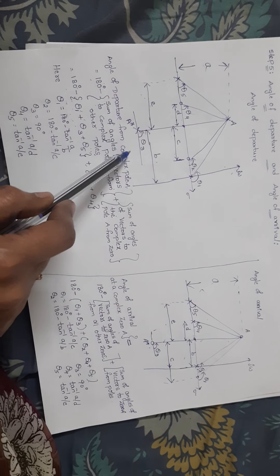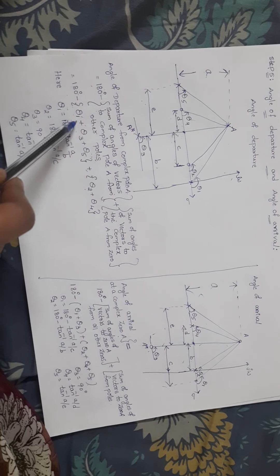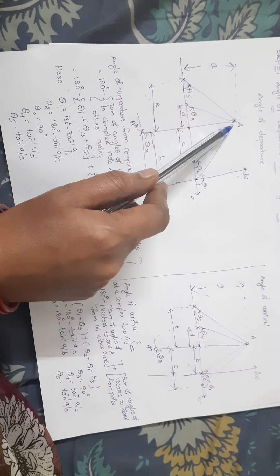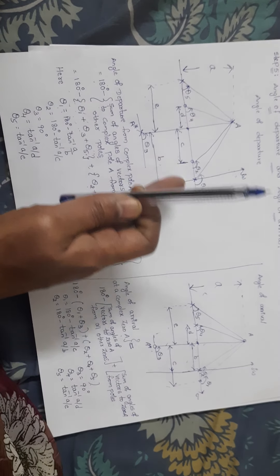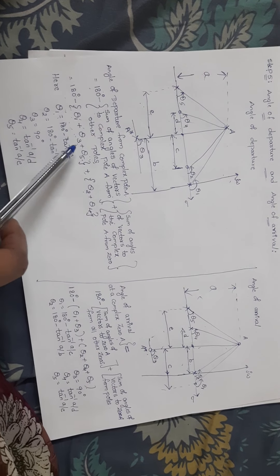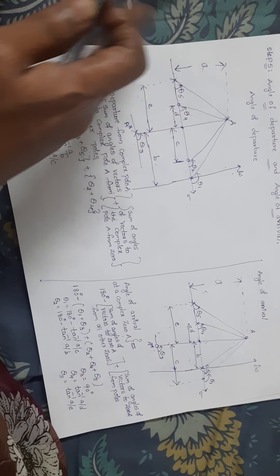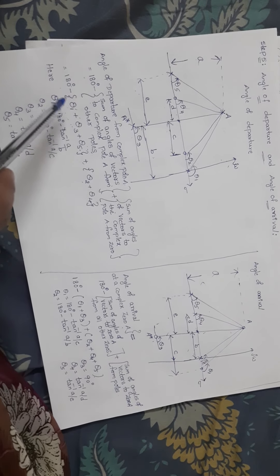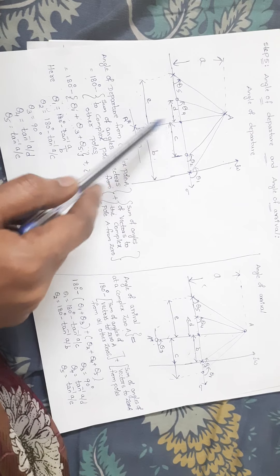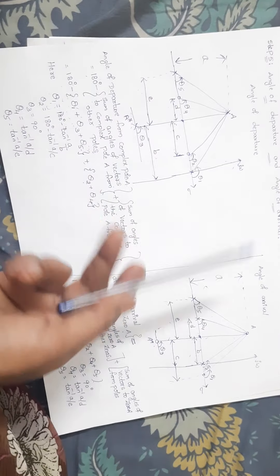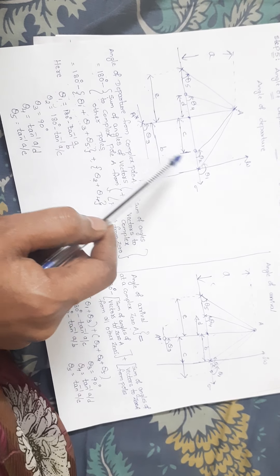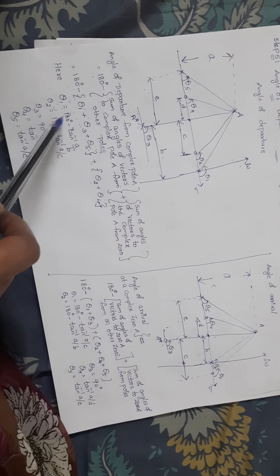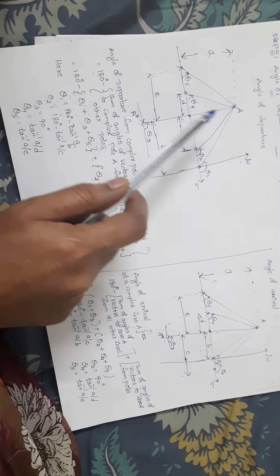In the formula, first you write the pole angles, then the zero angles. Now, for calculating each theta: if the pole or zero is to the right side of this vertical line through the complex pole, you write the angle as 180 degrees minus tan inverse. If it is on the left side, you write it directly as tan inverse. This is because the right side gives an outside angle and the left side gives an inside angle. You can name the angles theta 1, theta 2, theta 3, theta 4, theta 5 in any order, but remember to write pole angles under the poles section and zero angles under the zeros section.